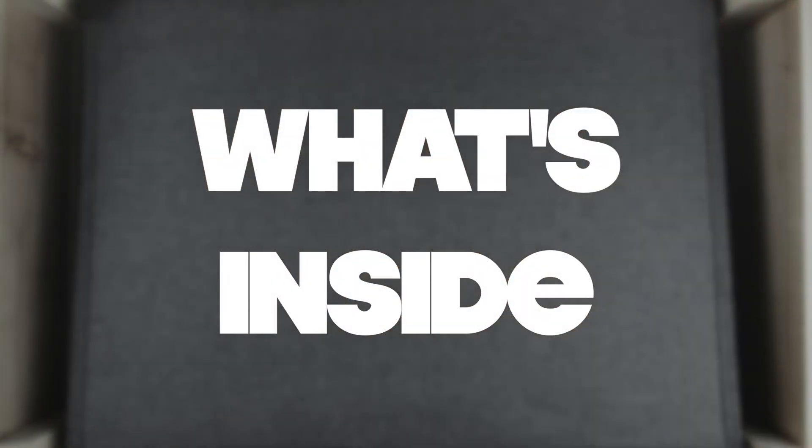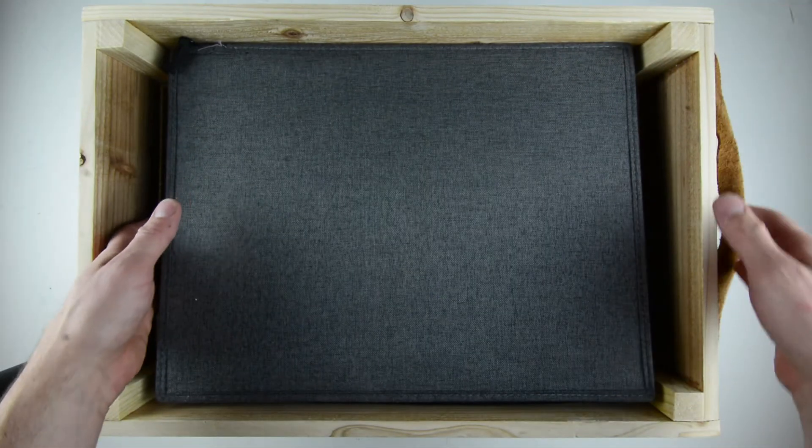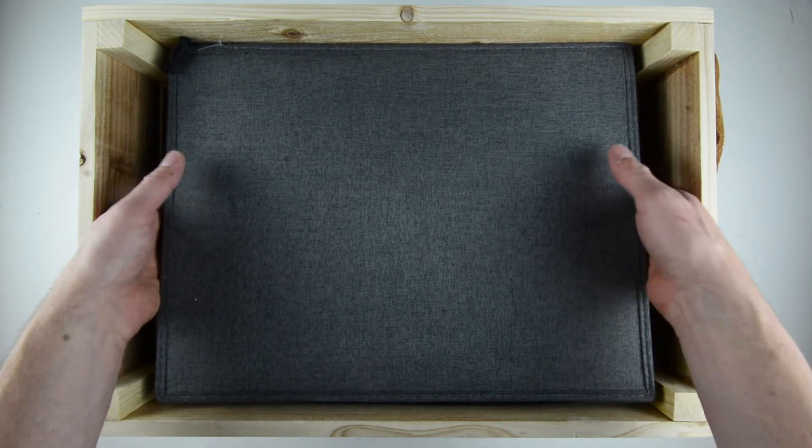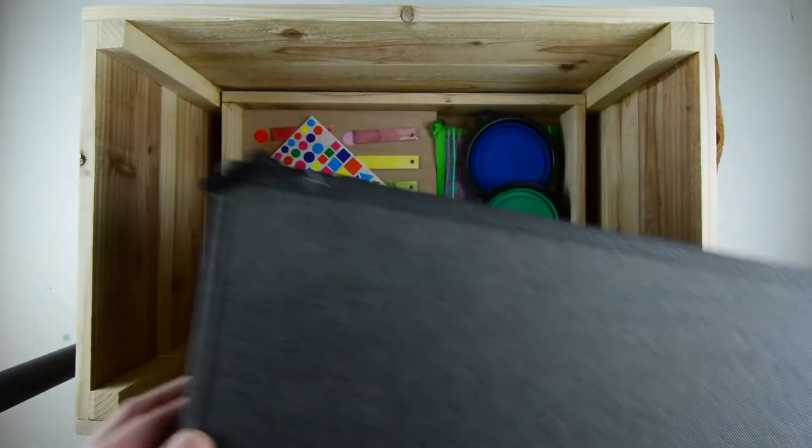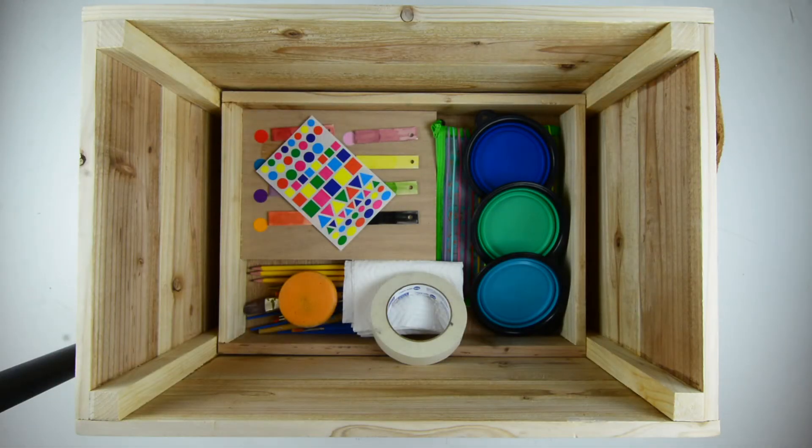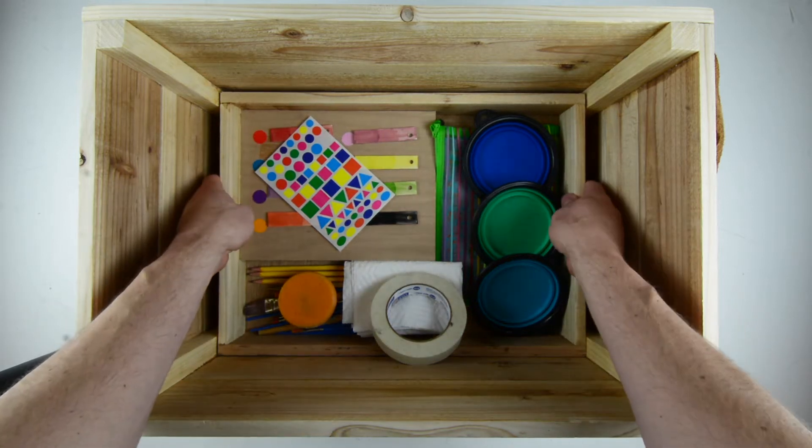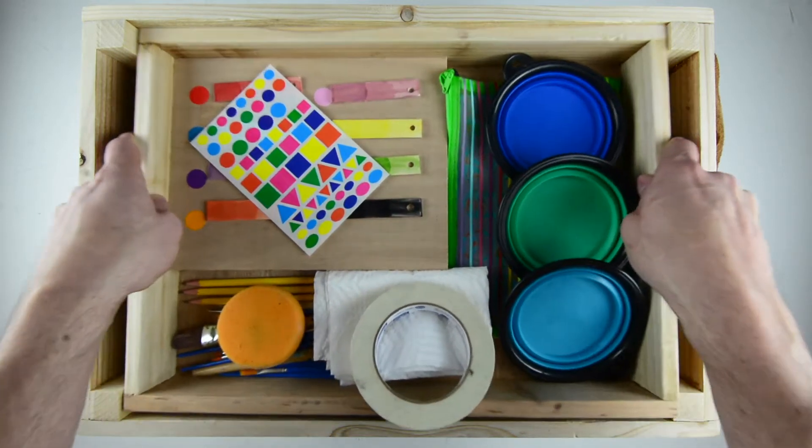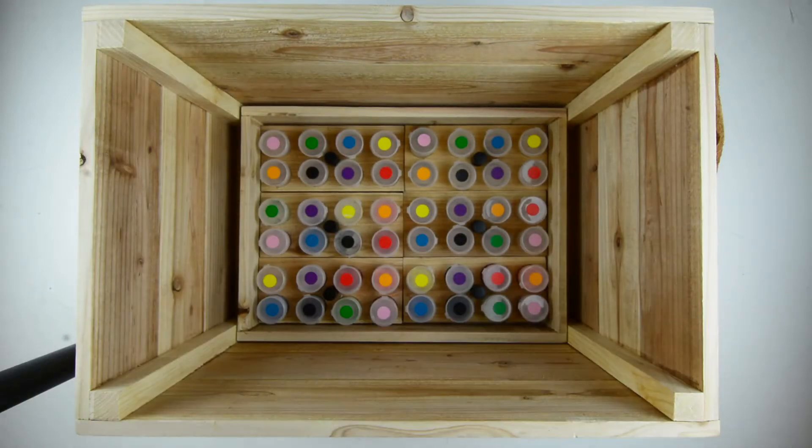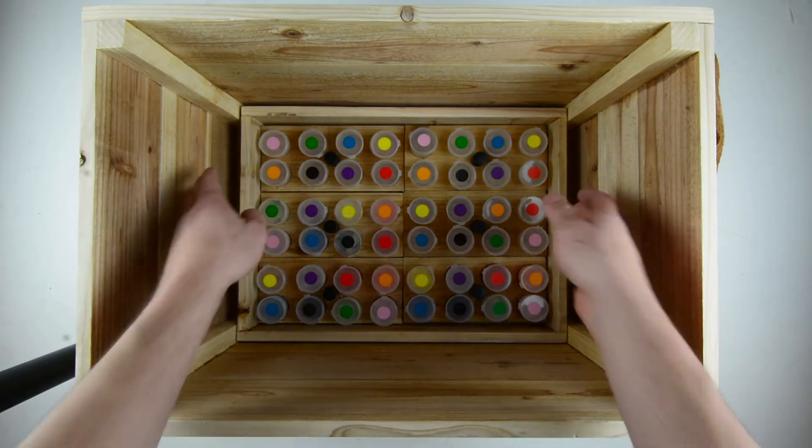After opening the lid of the kit, you will find three layers of supplies. The first layer safely houses all the mugs you are painting today. The second layer houses all of the painting supplies, and finally the third layer contains all the individual paint pallets.